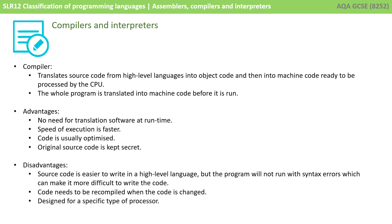A compiler translates source code from high-level languages into object code and then into machine code ready to be processed. The whole program is translated into machine code before it's run. The advantages are there's no need for further translation at runtime, the speed of execution is faster, and the code is usually optimized. It also keeps the original source code secret. The disadvantages are the program will not run with syntax errors, the code needs to be recompiled every time you make a change to the source code, and it's designed for a specific processor.